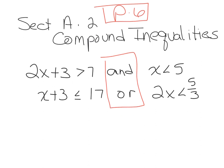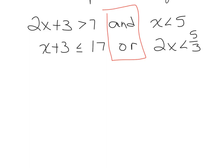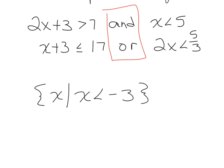The next thing we see on this page is set builder notation. We read it as: the set of x such that x is less than negative 3, meaning all numbers that meet the conditions set by the inequality are less than negative 3. We're going to use set builder notation and interval notation when we describe our solution sets for compound inequalities.